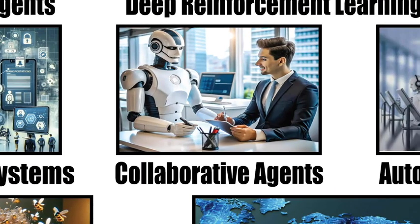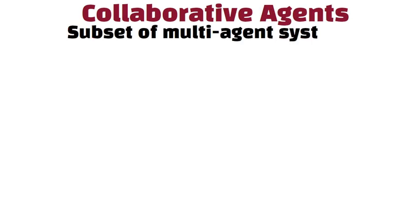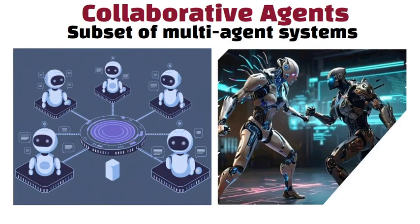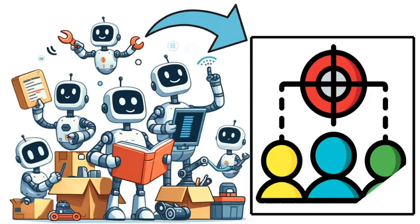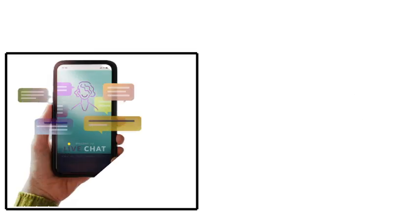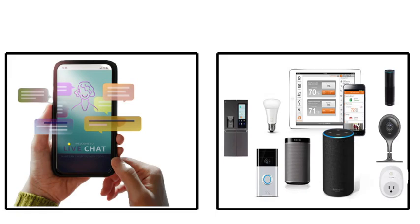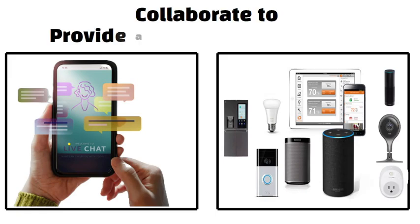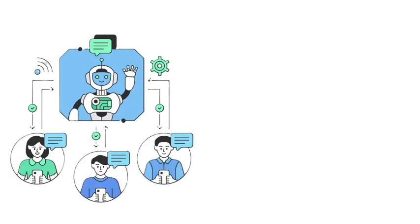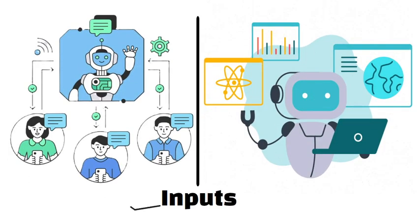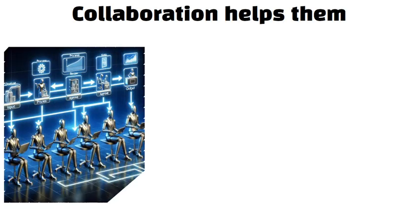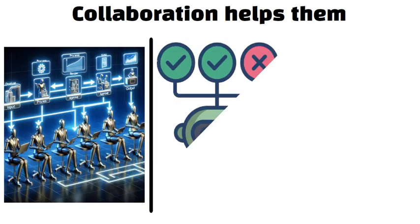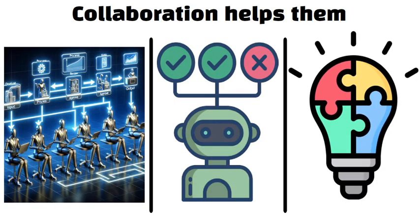Collaborative agents are a subset of multi-agent systems focused on cooperation rather than competition. They work in unison to reach a common goal. For example, virtual assistants on your phone or smart home devices often collaborate to provide a seamless experience. These agents share data and adjust their actions based on the inputs of others, ensuring that the overall system functions smoothly. Collaboration helps them combine their individual strengths, leading to better decisions and more effective problem solving.